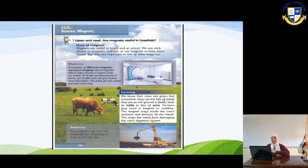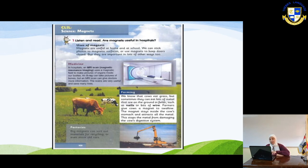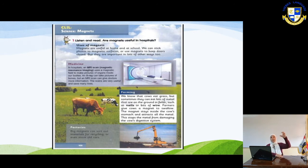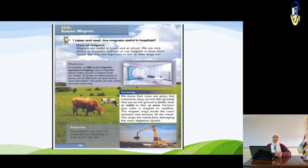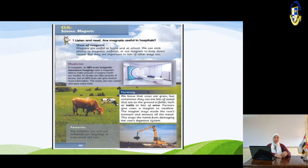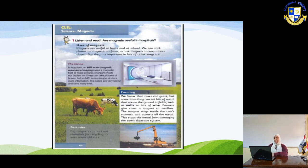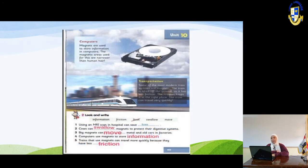In factories, big magnets are used too. Big magnets can sort out materials for recycling or even move old cars from one place to another, since the cars are too heavy to move by themselves. The magnet also separates magnetic materials from non-magnetic ones.